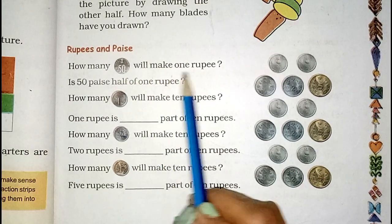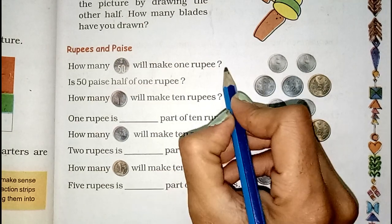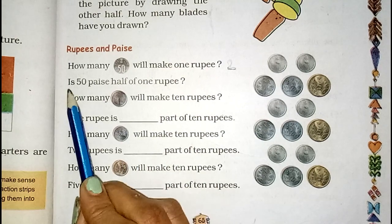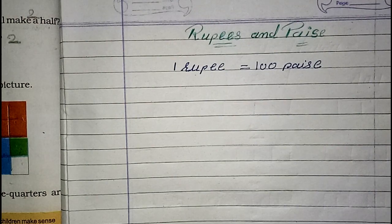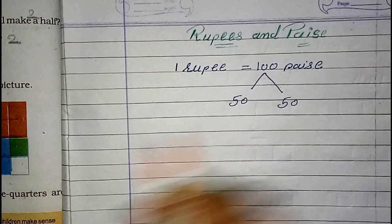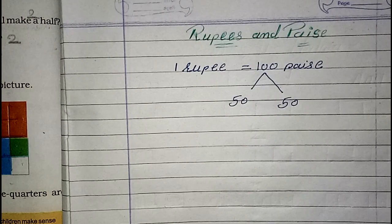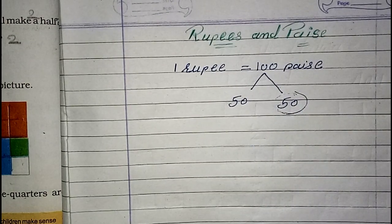Now let's say 25 — half of 50 is 25. So let's see what is there in our textbook. How many 50 paise will make 1 rupee? So 2 fifty-paise coins. Is 50 paise half of 1 rupee? Yes, it is half of 1 rupee. 1 rupee is equal to 100 paise, and half of 100 is 50 paise. So we can say 50 paise means half a rupee.